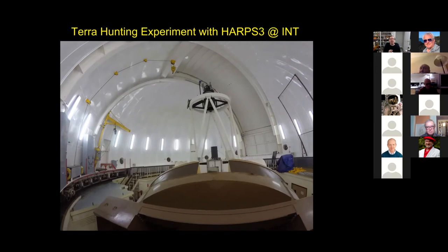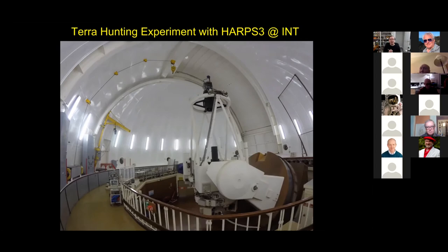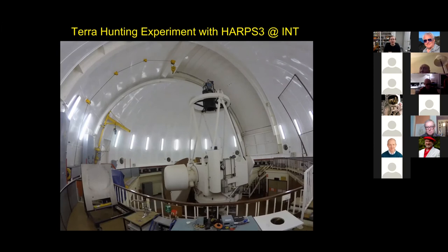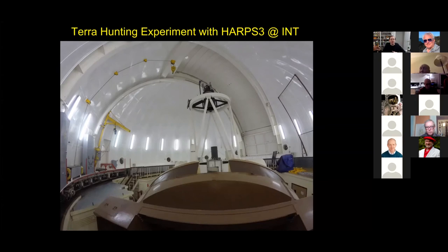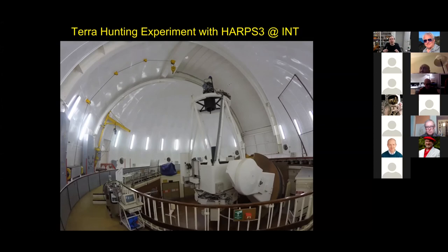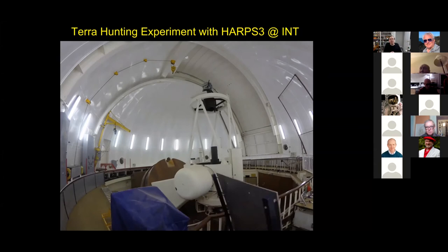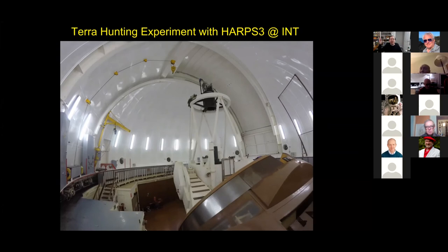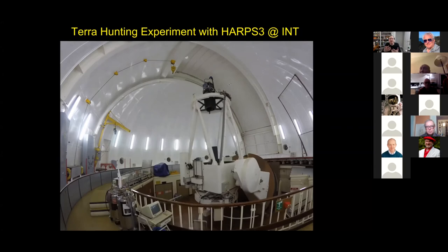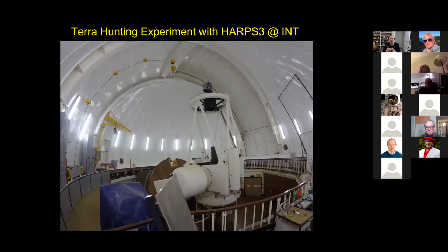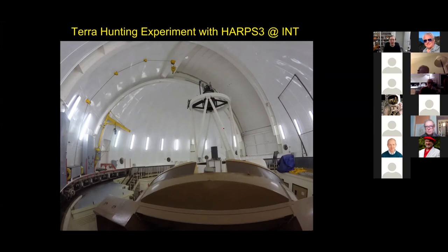To solve this, Queens is part of the Terra Hunting experiment with HARPS-3. HARPS-3 is a new spectrograph that will be mounted on the Isaac Newton Telescope on La Palma — basically a third copy of HARPS, which is used in the Southern Hemisphere and as HARPS North in the North. This will observe a small sample of stars very, very frequently for a very long time, allowing us to measure these stellar effects and have very good sampling so we don't have the issues that plagued the Alpha Centauri B claim.